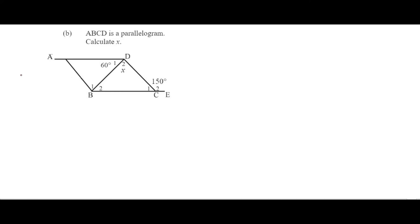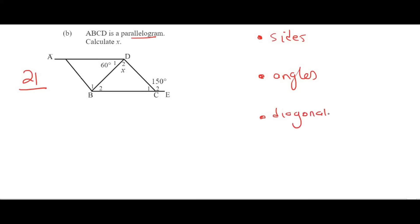This question is from page 21 of that book. ABCD is a parallelogram — so remember the properties: sides, angles, and diagonals. We want to calculate X. We know that AD and BC are parallel because opposite sides of a parallelogram are parallel. Whenever we have parallel lines, we can use F, U, and N angles. Looking at the diagram, we can see a Z shape, so angle B2 equals 60 degrees because of alternating angles, with AD parallel to BC.